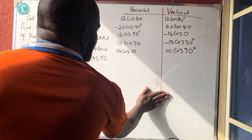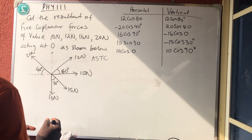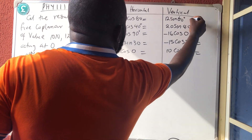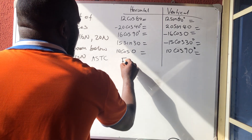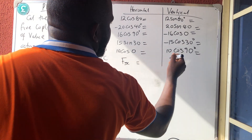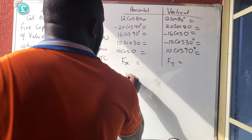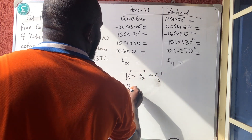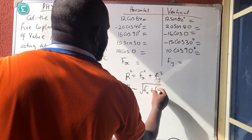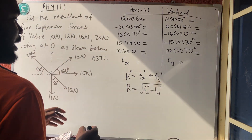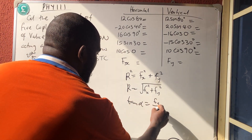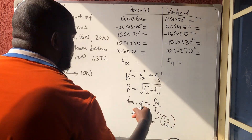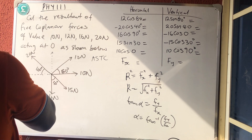Next, get the numerical answer for all these components. Sum them up to get the total force in the x-axis (Fx) and the total force in the y-axis (Fy). The resultant R is given by R² = Fx² + Fy², so R equals the square root of both. For direction, tan α = Fy / Fx, so α = tan⁻¹(Fy / Fx).